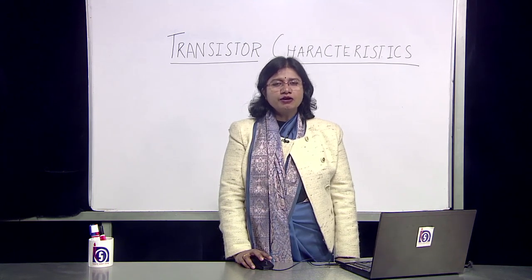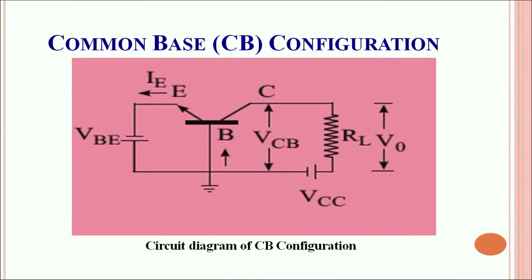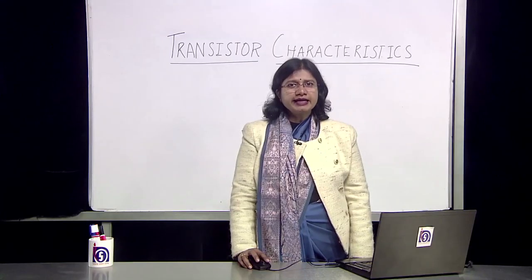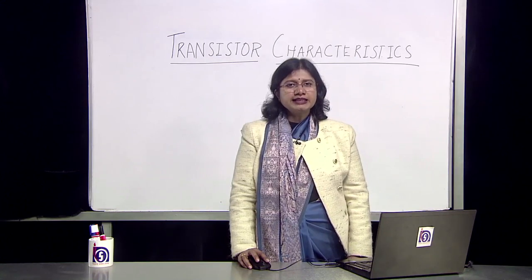Let's have a look at the transistor configurations in a common base arrangement. In the circuit diagram of the common base configuration, the base is common to both the input circuit and the output circuit. The emitter-base junction is kept forward biased by connecting the N-type emitter to the negative terminal of the battery and the P-type base to the positive terminal. On the output side, the collector-base arrangement is made in reverse bias. Both the input and the output characteristics indicate a constant voltage over a given range.